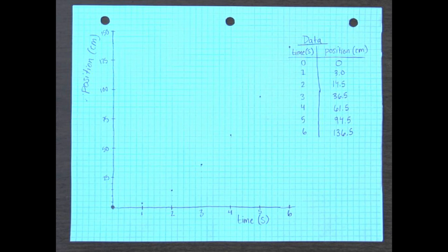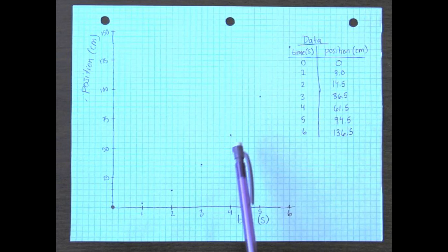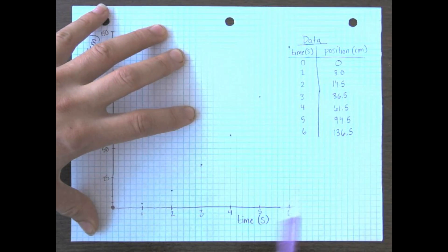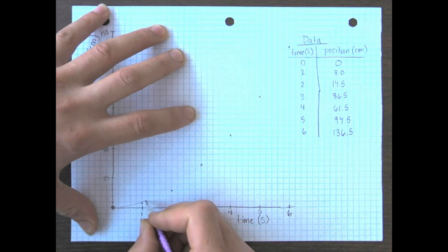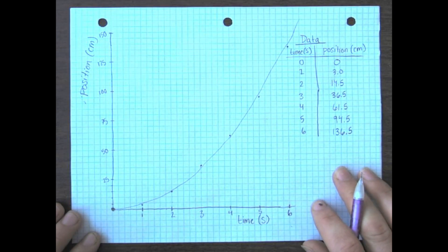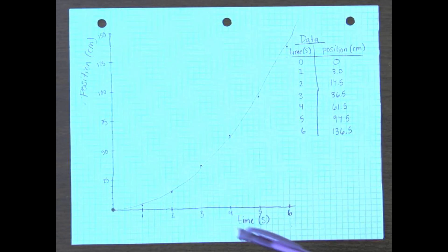If I ask you whether a linear line would fit all this data well, the answer is probably no — and that's the right answer. This is no longer a linear relationship. We can see that the data points start out a little shallow and get more and more steep as they go on. So instead of drawing a linear line, we're going to draw a curve that fits this data as best it can. There's our data and graph put together — a relationship between position on the y-axis and time on the x-axis.